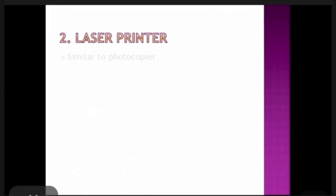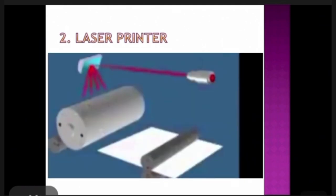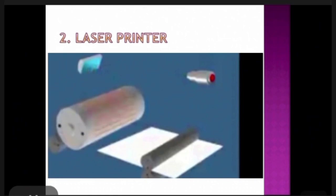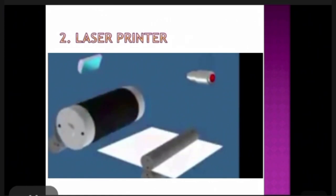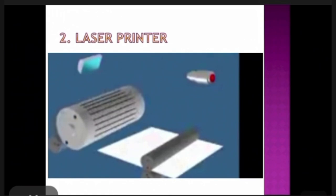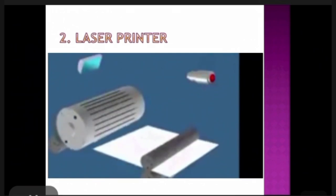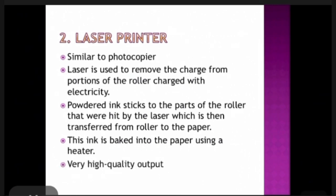Laser printers work similar to a photocopier. A laser is used to remove the charge from portions of a roller that is charged with electricity. Powdered ink sticks to the parts of the roller that were hit by the laser, and is then transferred from the roller to the paper. They provide very high quality output, and the ink can be baked into the paper using a heater.